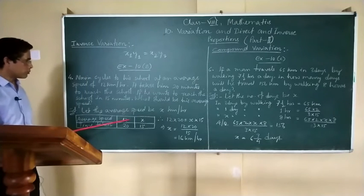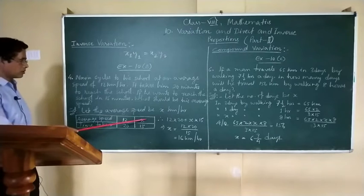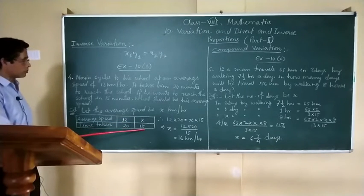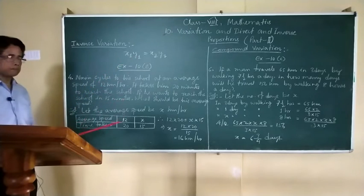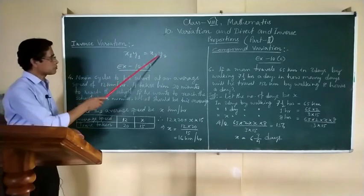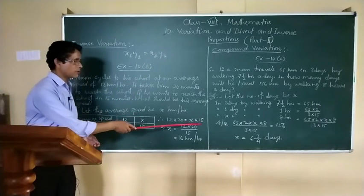What is x1 and y1 here? The first value you can take as x1, x2, y1, y2. So x1, y1 means 12 into 20 equals x2, y2 means x into 15. That's what we have written here.